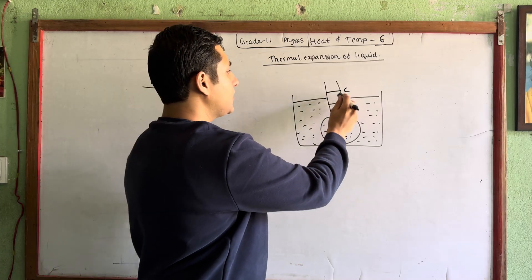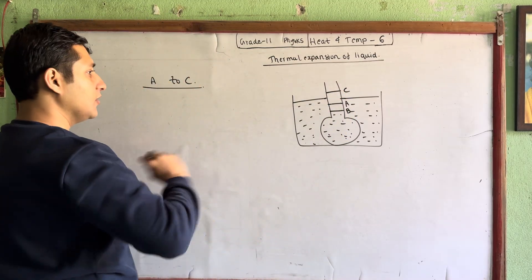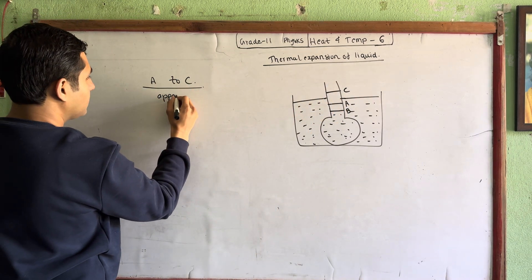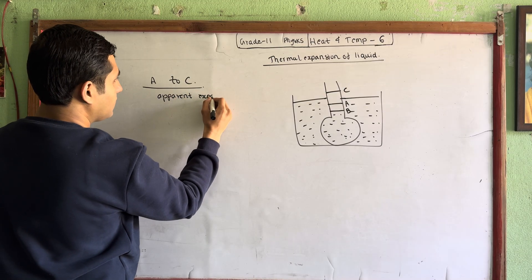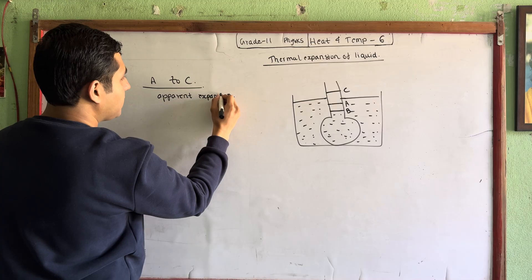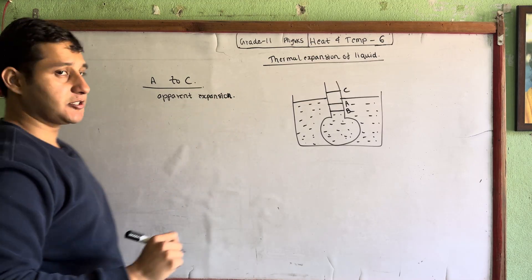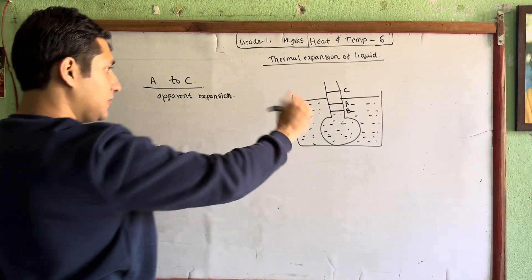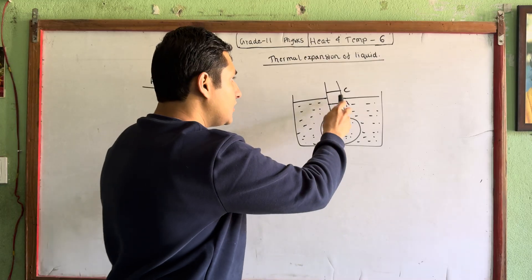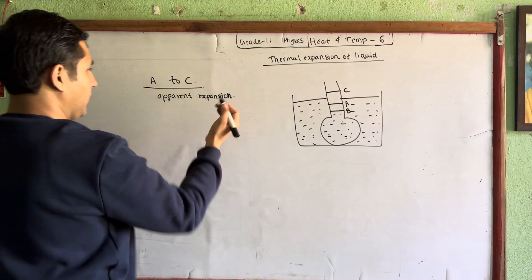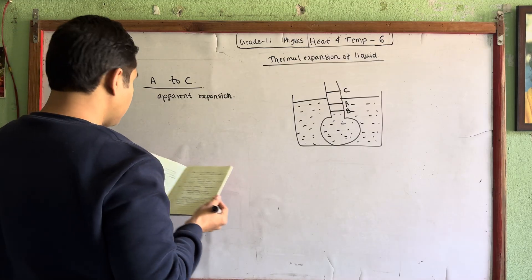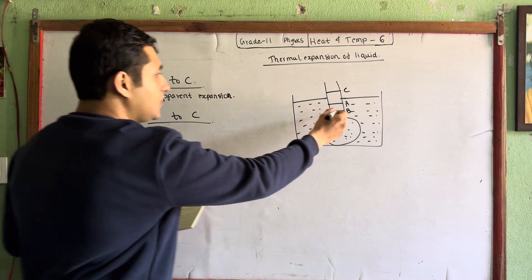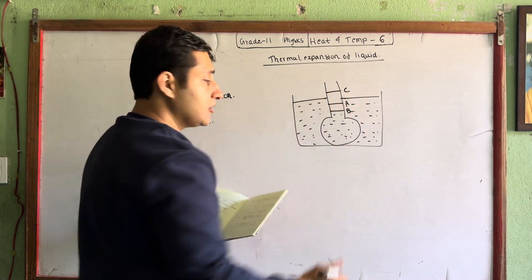AC expansion means real expansion. So this is apparent expansion — this means that the liquid expands back and forth, so this is apparent expansion. B to C and then real expansion — apparent expansion.